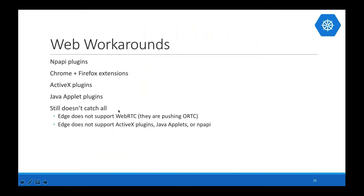There are workarounds for web browsers that don't support everything. You can build NPAPI plugins for Windows, extensions for Chrome/Firefox/Opera, ActiveX plugins, or Java applets. The issue is Edge no longer has NPAPI plugin support, doesn't support ActiveX plugins, and Java applets are limited. Edge is the gray area where we can't work around it, while other browsers still support NPAPI, their own extensions, or Java applets — through which we can access native APIs for codecs and making connections through STUN and TURN.